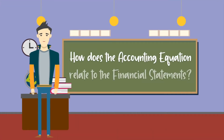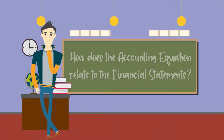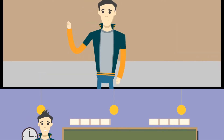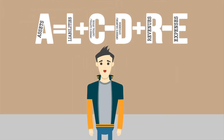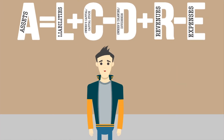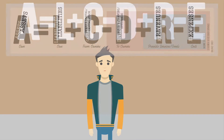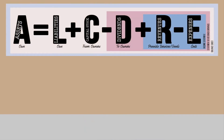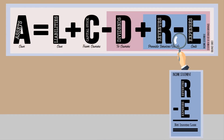How does the accounting equation relate to the financial statements? The accounting equation is the financial statements from right to left. The first financial statement prepared is the income statement, which is revenue minus expenses. That will equal net income or loss.